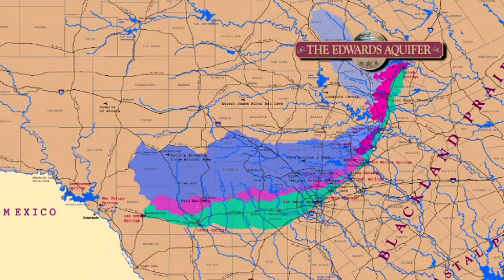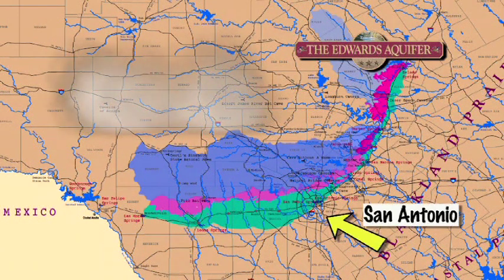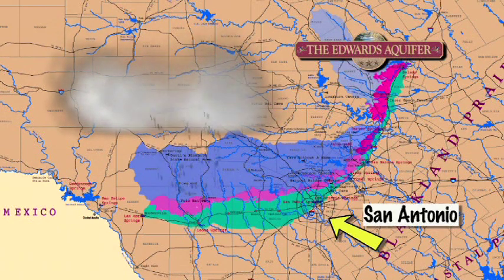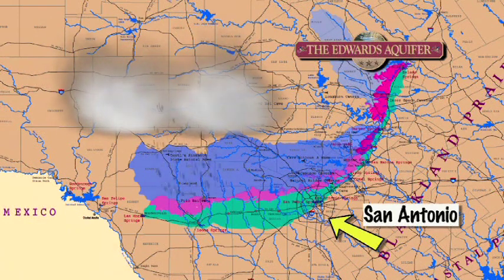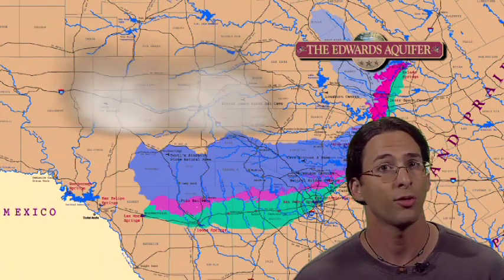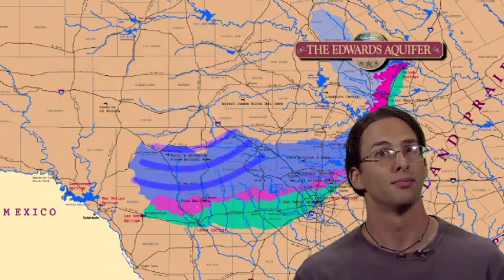This is a map of the Edwards Aquifer. Here is San Antonio. When it rains over to the west around Uvalde and up in the Hill Country, water with small amounts of carbonic acid hits the soil and infiltrates into the ground. It trickles down until it pools up at the water table. Remember our fish tank aquifer that we made?